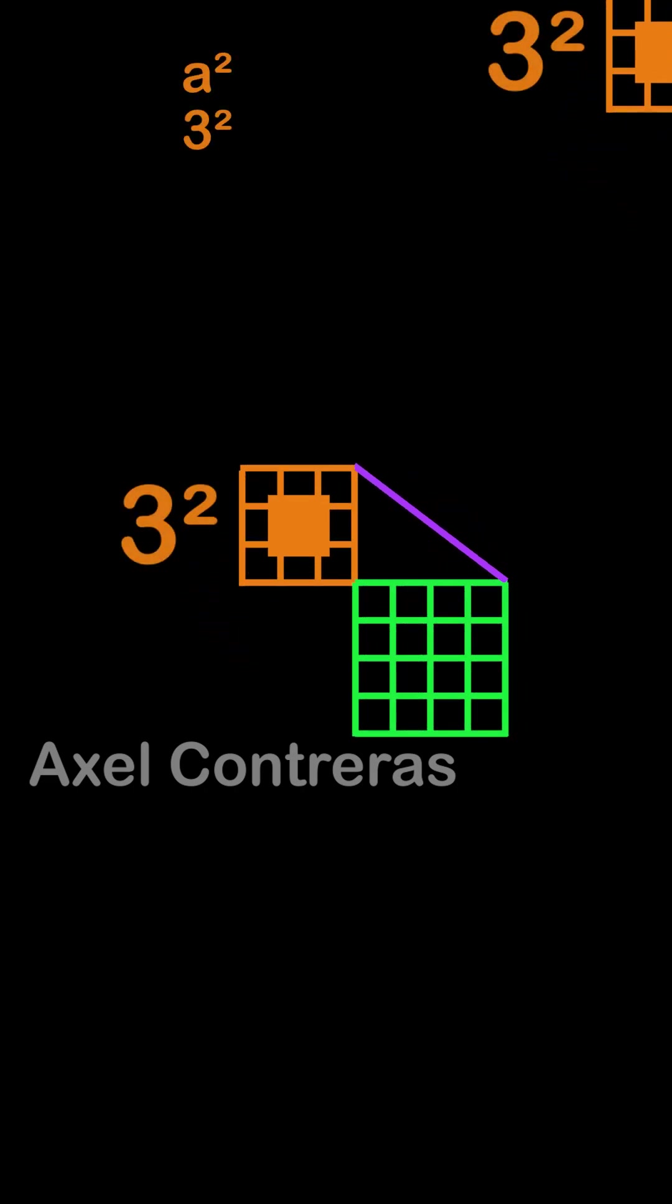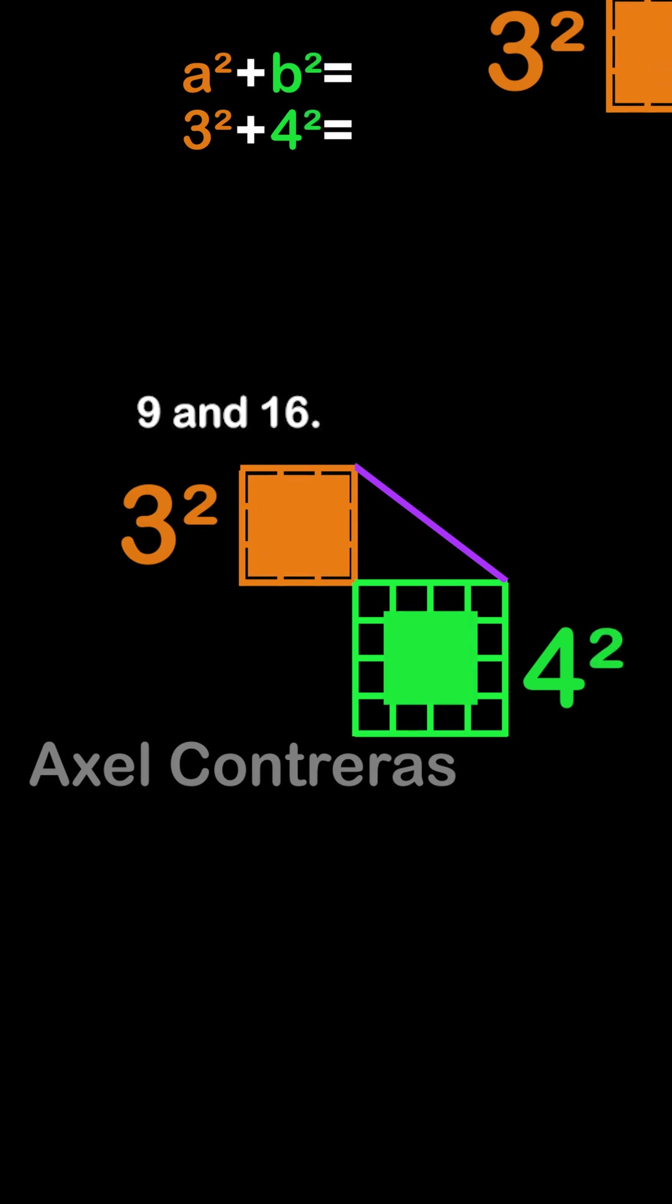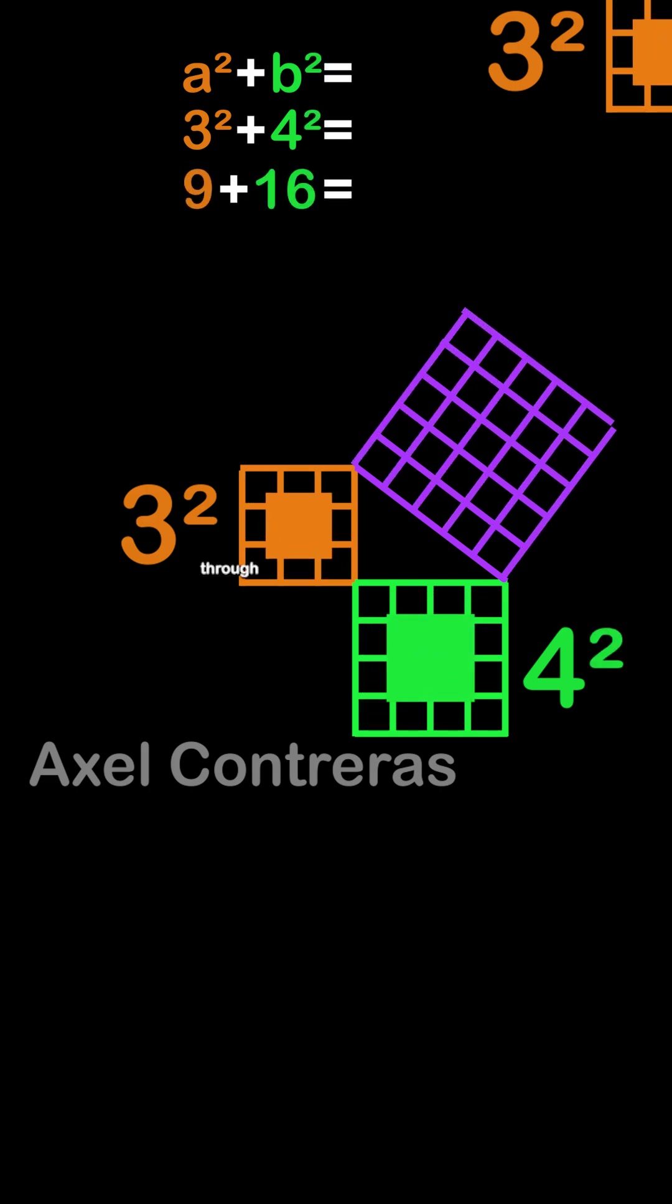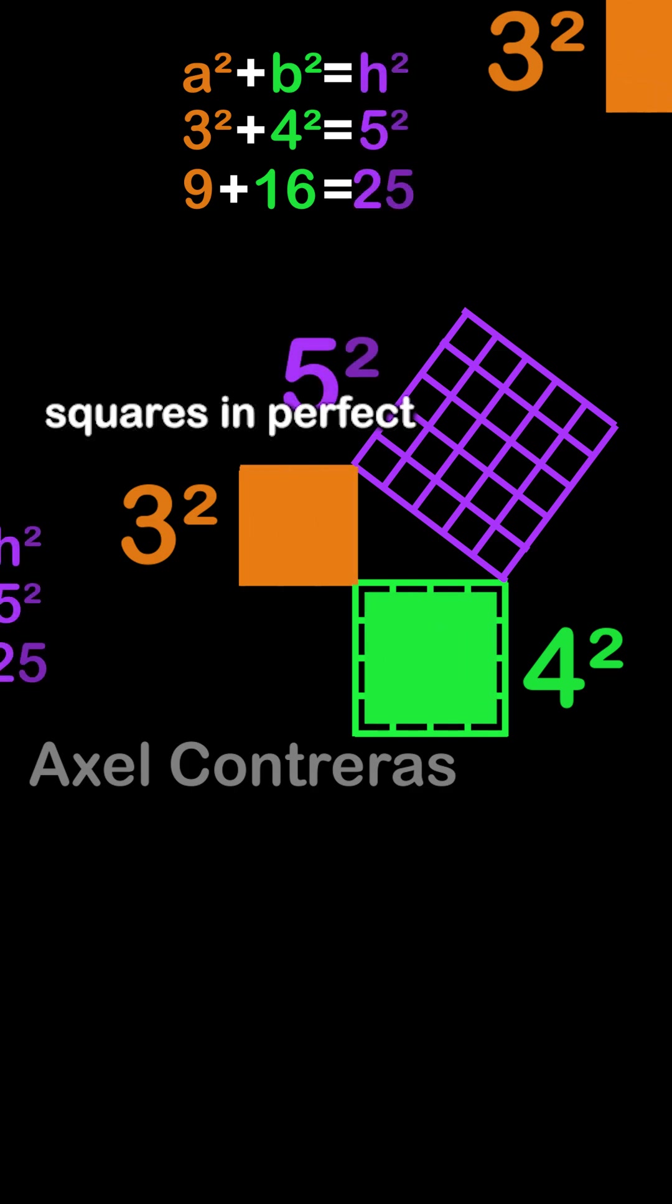Three squared, four squared, five. Nine and sixteen, they add up true. Twenty-five through all of time, the sum of squares in perfect rhyme.